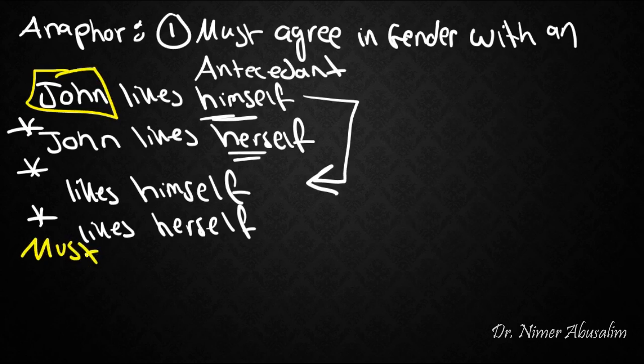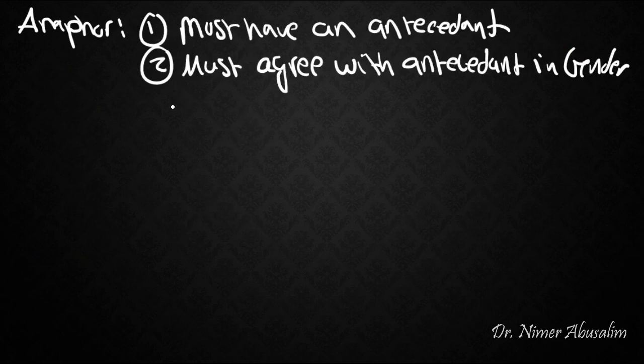So now we come up with a new generalization that this antecedent that we were looking at here is a must. This is not optional. So we go back to our hypothesis. An anaphor must agree in gender with an antecedent. We change this. We say with its antecedent. That means that there should or must be an antecedent there. So this is our new version so far of our hypothesis. It must have an antecedent and it must agree with the antecedent in gender.